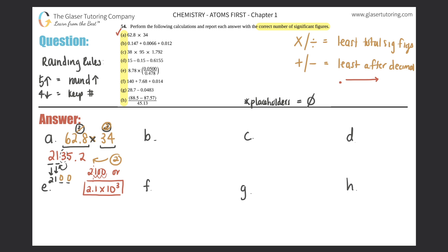Letter b is all addition, so we take the least number of sig figs to the right of the decimal. I stack them up: 0.147, then 0.0066 lined up so the seven and the six align, then 0.012. Let's get the full number first and then round. 0.147 plus 0.0066 plus 0.012 gives 0.1656.